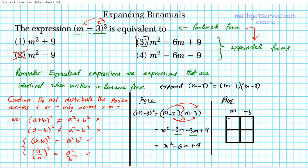So you put the first factor on the top, m minus three. And then you align the second factor vertically to the left, m minus three. And then you just multiply. So m times m is m squared, m times negative three is negative three m, m times negative three is negative three m, and negative three times negative three is positive nine.